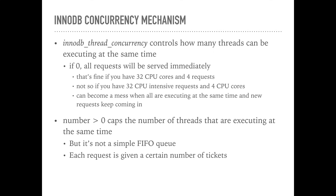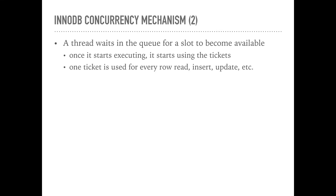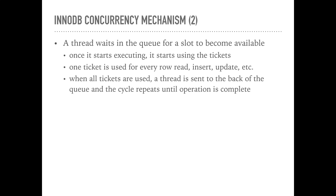Here's how it works: a thread entering the InnoDB queue is given a certain number of tickets, equal to the value of innodb_concurrency_tickets — 500 by default on MySQL 5.5 or earlier, 5000 starting MySQL 5.6. It waits in a queue until a slot becomes available, then starts executing. Every time the thread does a certain operation it loses one ticket — for example, it loses a ticket every time a row is read, inserted, or updated. As soon as the thread runs out of tickets, it is placed at the back of the queue and needs to wait until a slot becomes available again, assuming the current number of running threads is above the value of innodb_thread_concurrency.